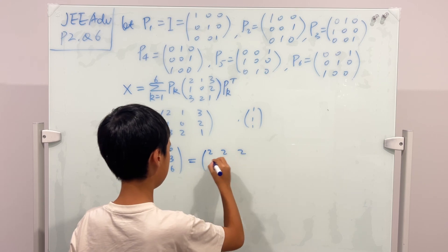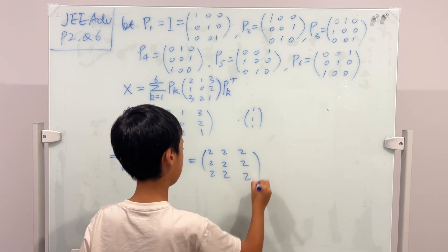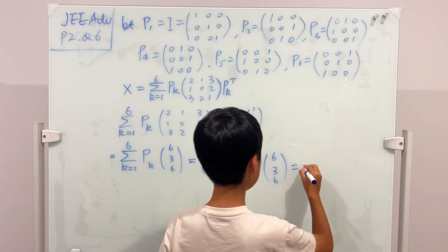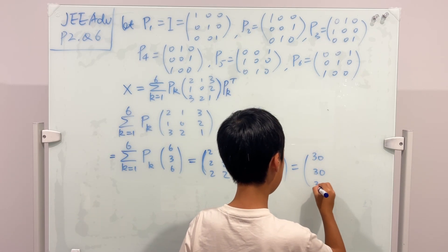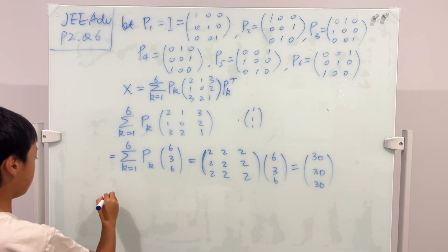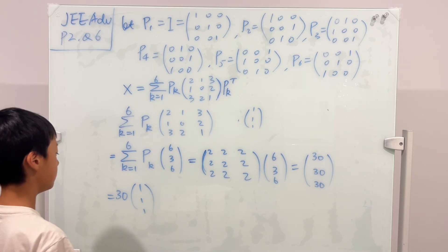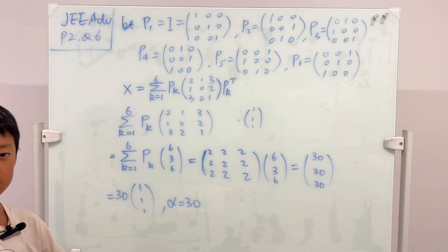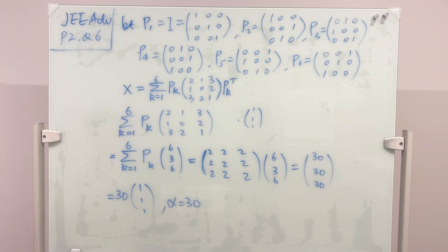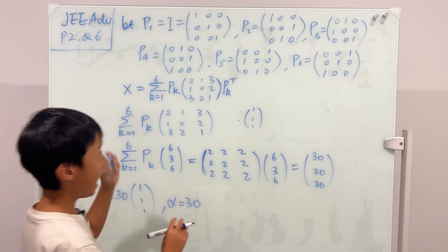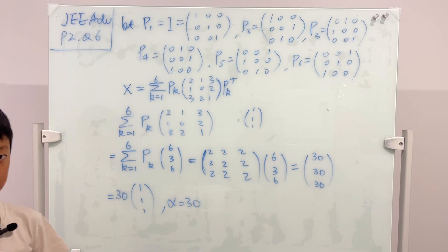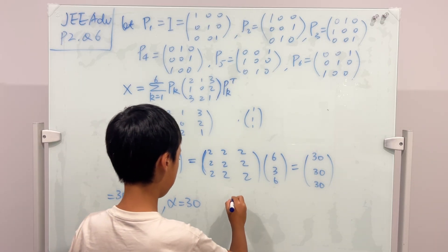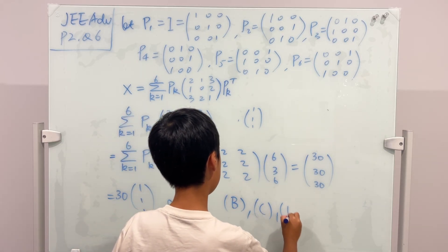The sum of all six permutation matrices is a matrix of all 2's. Multiplying that by [6,3,6]ᵀ gives [30,30,30]ᵀ = 30·[1,1,1]ᵀ. So α = 30, confirming that C is correct. Since C is true, A is false. The final answers to this 2019 JEE Advanced question are B, C, and D.